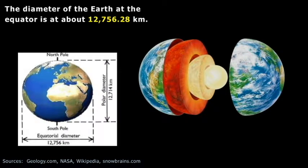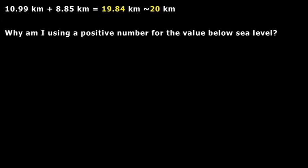The diameter of the Earth at the equator is about 12,756.28 kilometers. And here just shows you the equatorial and the polar diameters, but the average is that 12,756.28.